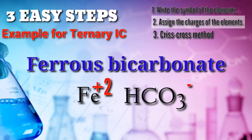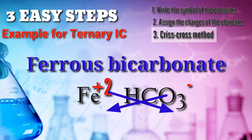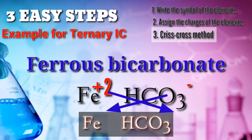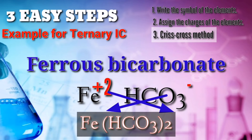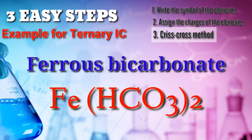Fe positive 2 is ferrous, the lowest oxidation number of iron. Fe positive 3 is ferric, the highest oxidation number. Now, let's go to the third step: the criss-cross method. The charges of our iron and bicarbonate will be exchanged. Positive 2 will become the subscript of our bicarbonate. Since the bicarbonate charge is negative 1, we don't need to write it in the formula. The chemical formula for ferrous bicarbonate is Fe(HCO3)2.